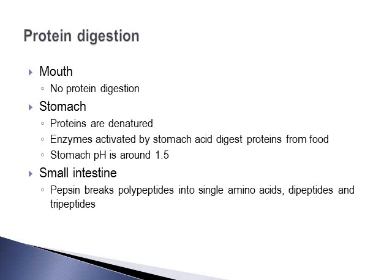Those proteins are then transferred to the small intestine via chyme. This is where pepsin, the major protein-digesting enzyme, breaks down polypeptides — chains of 10 or more amino acids — into single amino acids, dipeptides, or tripeptides. Pepsin is your clue that something relates to protein, just as amylase relates to carbohydrate and lipase relates to fats. Pepsin is also produced by the pancreas.